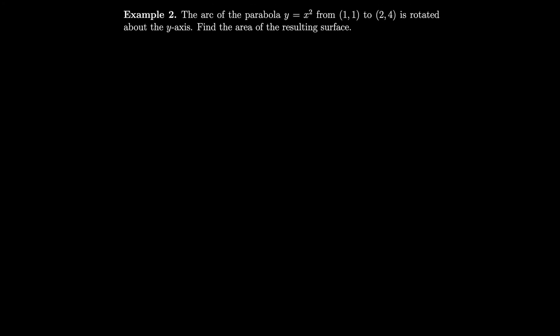Now let's find the surface area of the arc of the parabola y equals x² from (1, 1) to (2, 4) when it's rotated about the y-axis. We have y = x², so the derivative is 2x.